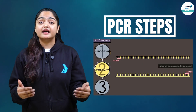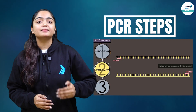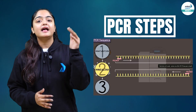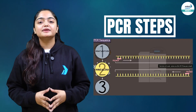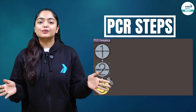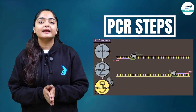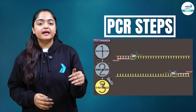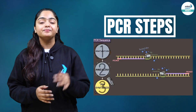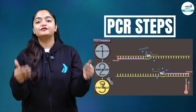In the second step, annealing, we utilize the primers so that the DNA segment can be amplified. The temperature in the second step is comparatively lower than the first step. In the third and last step, extension or DNA synthesis, we synthesize the DNA and the actual copies of DNA are made. We utilize the DNA nucleotides along with the DNA polymerase enzyme, and the temperature here is comparatively higher than the second step.